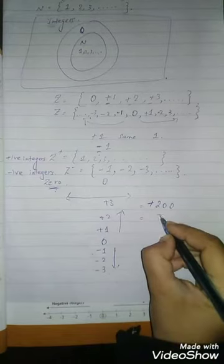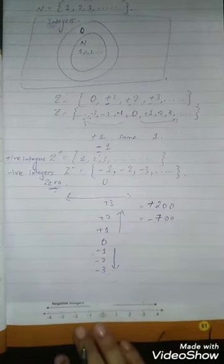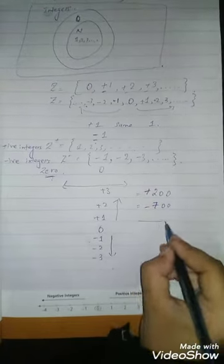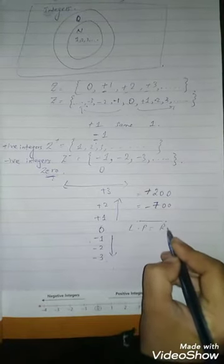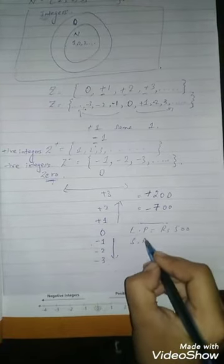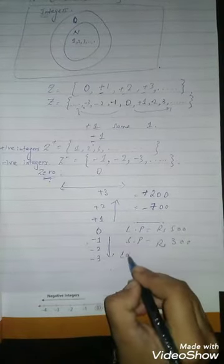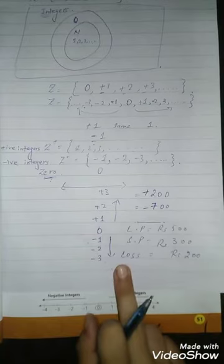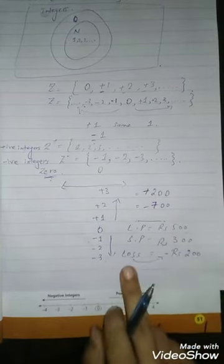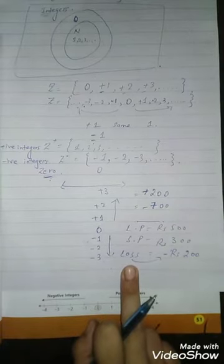If you receive money, the amount increases, so you show it as a positive integer. If money is going away — for example, a shopkeeper bought an item for 500 rupees and sold it for 300 rupees — the shopkeeper has a loss of 200 rupees. We show loss with a negative integer. If the shopkeeper had a profit, we would show it with a positive integer.